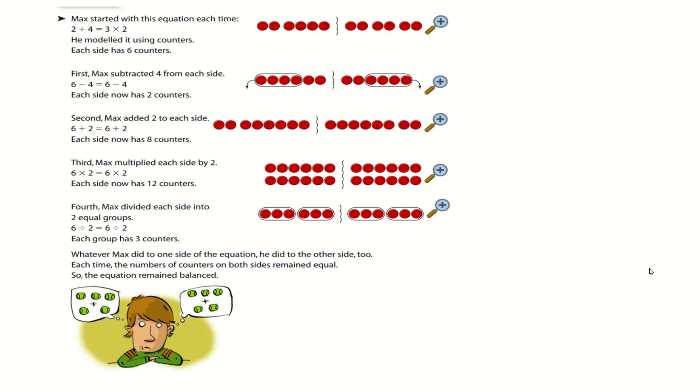So this first little thing is all about counters. Max has started with this equation each time, so he has 2 plus 4 and 3 times 2, so 2 plus 4 is 6. 3 times 2 is 6. He modeled it using counters, each side has 6 counters, but it looks different. We have 2 here, we have 4 here, we have 2 here, 2 here, 2 here, for 3 times 2.